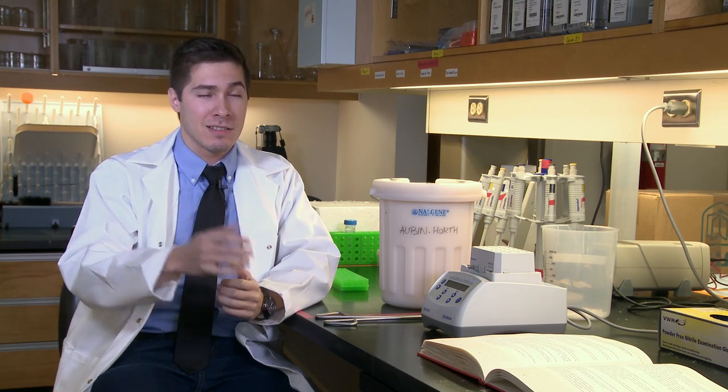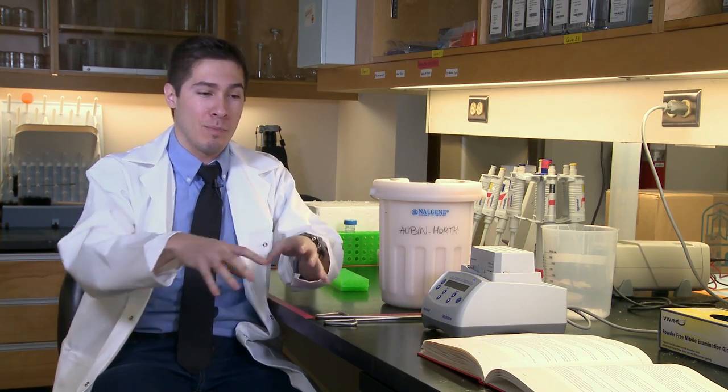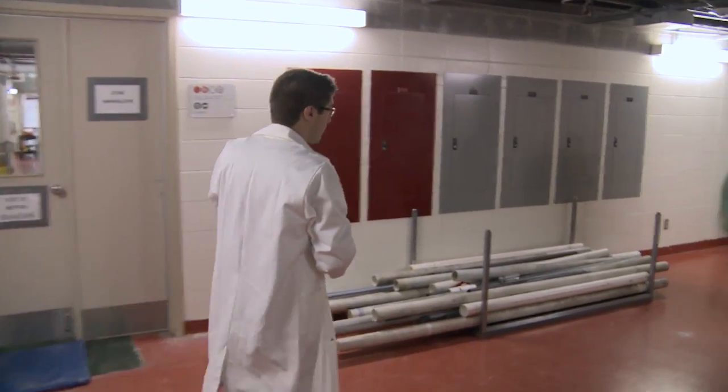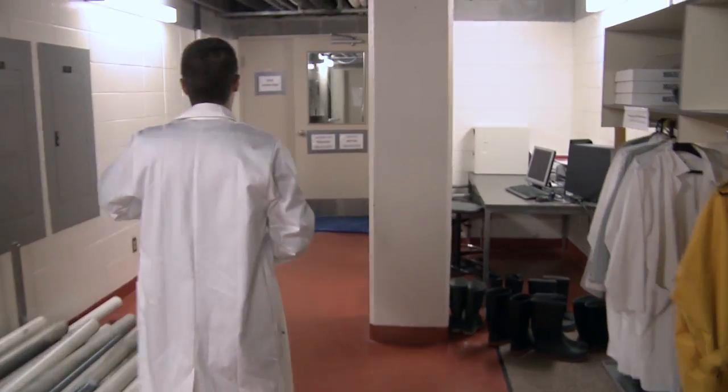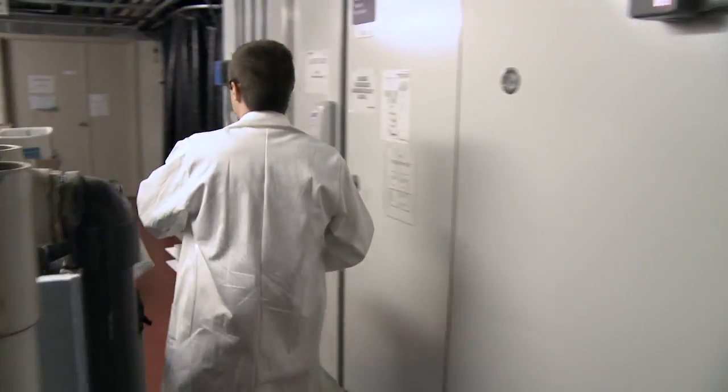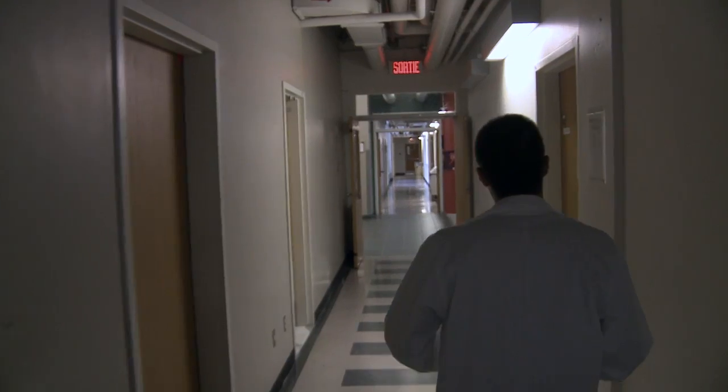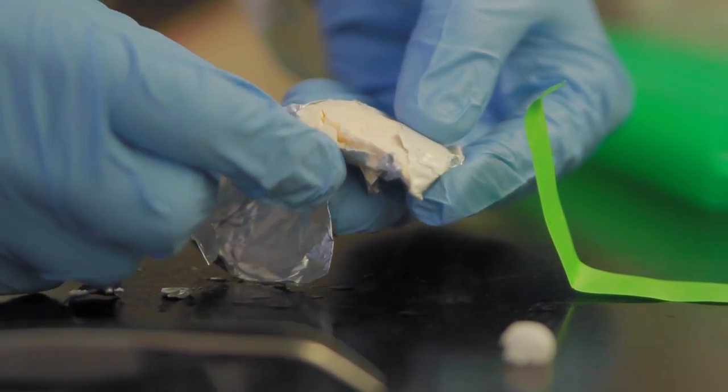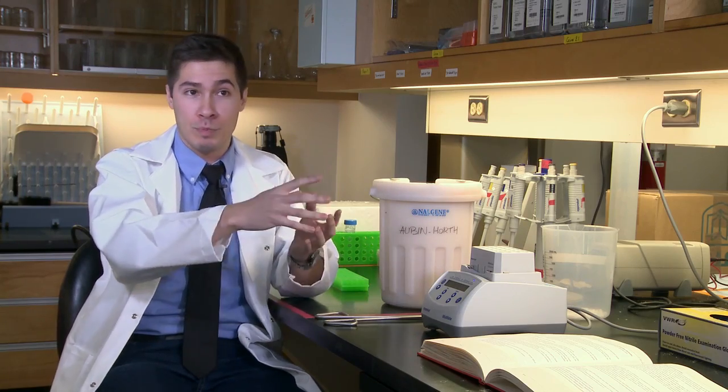Les poissons, c'est des organismes fascinants. On a juste à penser aux cyclidés d'Afrique. Ils ont des structures sociales très complexes, dans lesquelles tu as, par exemple, un mâle et une femelle qui se reproduisent en colonies, et tu as plein de petits aidants qui vont nettoyer les œufs et défendre le territoire. Les poissons, c'est aussi fascinant parce que c'est le groupe de vertébrés le plus diversifié au monde. Une autre chose qui est vraiment très intéressante chez les poissons, c'est qu'ils produisent des œufs et ils les produisent en très grande quantité. Donc toute recherche qui porte sur la procréation ou sur les effets que pourrait avoir l'environnement de la mère ou du père sur les rejetons, ça devient un modèle très efficace.